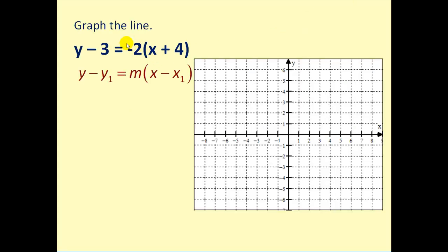Let's graph the linear equation y minus three equals negative two times the quantity x plus four. We can identify the slope — the slope is negative two. In order to use this to graph the line, we'll write negative two as negative two over one.